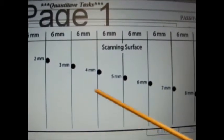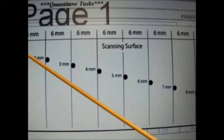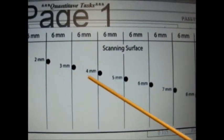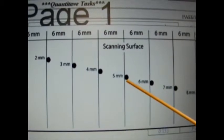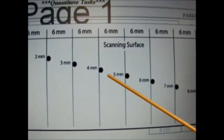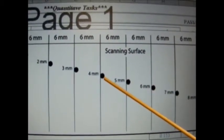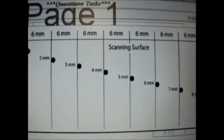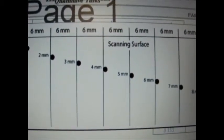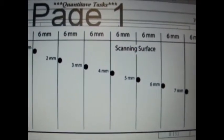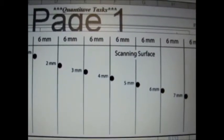For example, we count one, two, three, four, five reflectors total, but we see only four on the image. Therefore, we will subtract five from four, calculating a distance of one centimeter for the dead zone.